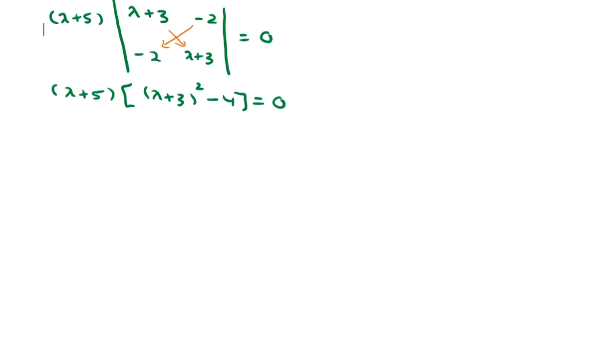I'm going to go ahead and expand what's in brackets there and simplify at the same time. We're going to have lambda squared plus 6 lambda. That would be plus 9 minus 4, giving us plus 5 equals 0. And we're going to factor that quadratic. It's going to be lambda plus 5 times lambda plus 1 equals 0.